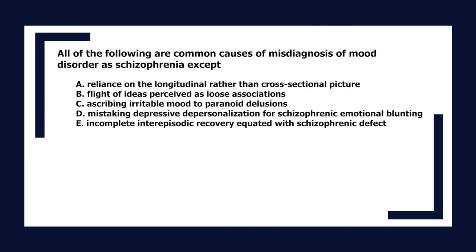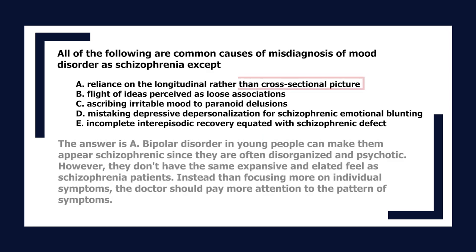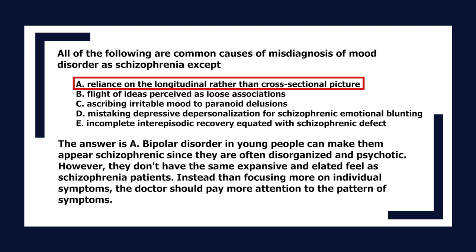All of the following are common causes of misdiagnosis of mood disorder as schizophrenia except: A. Reliance on the longitudinal rather than cross-sectional picture. B. Flight of ideas perceived as loose associations. C. Ascribing irritable mood to paranoid delusions. D. Mistaking depressive depersonalization for schizophrenic emotional blunting. E. Incomplete inter-episodic recovery equated with schizophrenic defect. The answer is A. Bipolar disorder in young people can appear schizophrenic; the doctor should pay more attention to the pattern of symptoms rather than individual symptoms.